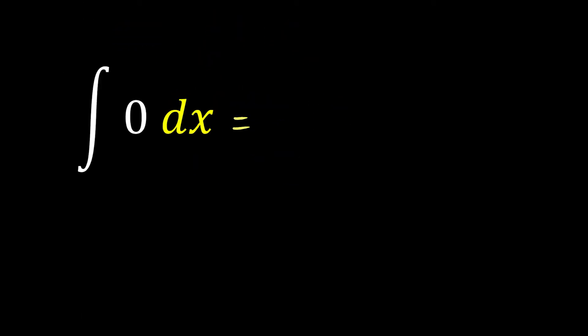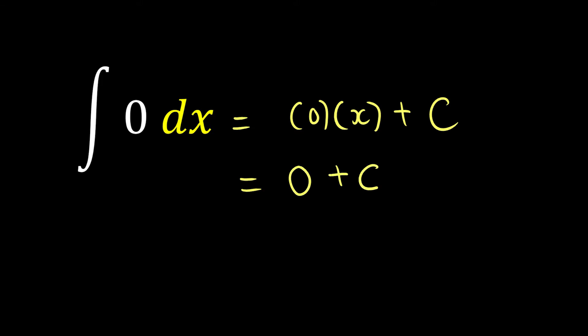Next, how about the integration of 0? Since 0 is also a constant, the answer is going to be itself times the variable we are integrating with respect to, so it's 0 times x plus C. Whatever times 0 is 0, so we have 0 plus C, and in the end we have just C.